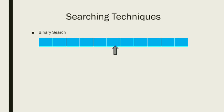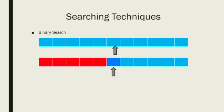The key we are searching for may be available in the first part of the array. In Fibonacci Search, the middle element position is determined by the Fibonacci number.